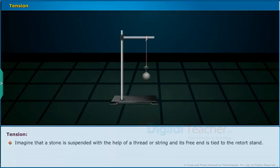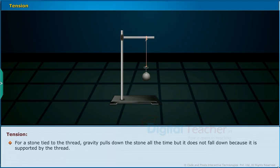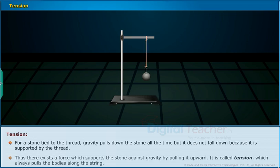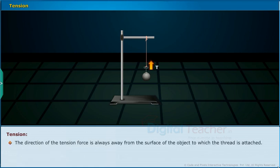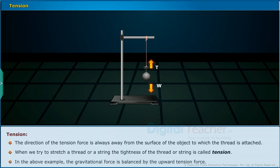Imagine a stone suspended with the help of a thread whose free end is tied to a retort stand. The stone would fall down due to gravitational pull if the string were broken. For a stone tied to a thread, gravity pulls down the stone all the time, but it does not fall because it is supported by the thread. There exists a force which supports the stone against gravity by pulling it upward — this is called tension, which always pulls the bodies along the string. The direction of tension is always away from the surface of the object to which the thread is attached. When we try to stretch a thread or string, the tightness of the thread is called tension. In this example, the gravitational force is balanced by the upward tension force.